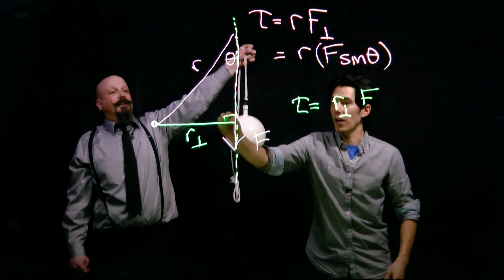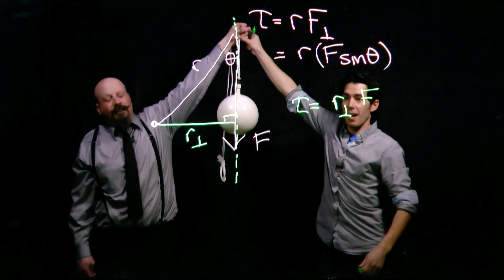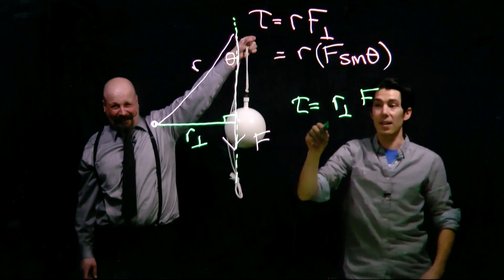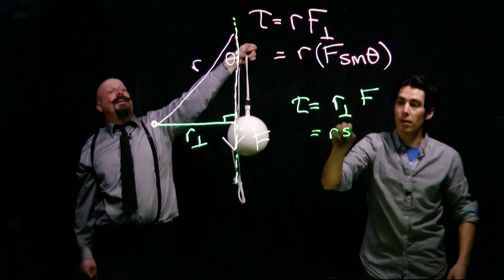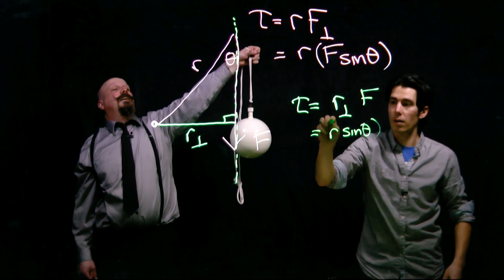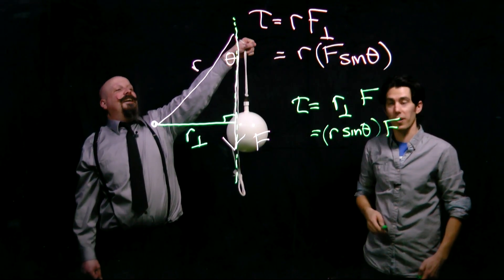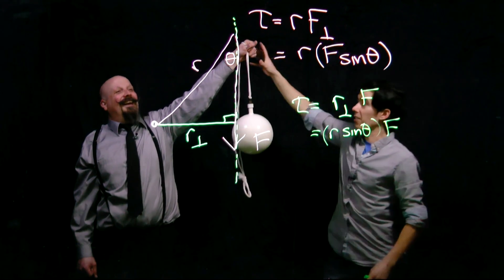Now, we've got a right angle triangle in here, and so R perpendicular is going to be equal to R times sine theta. And again, we just use the full force, and there's our expression for torque. They look like the same thing. It's because they are the same thing.